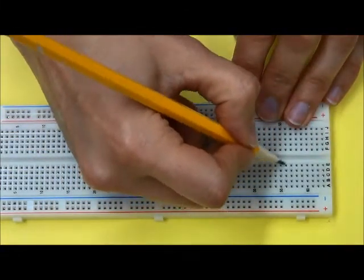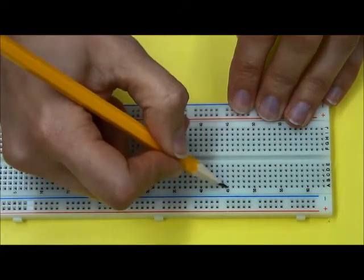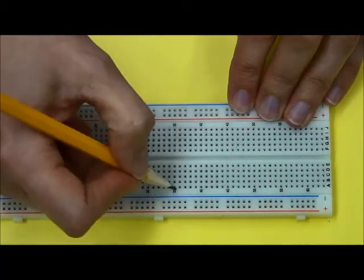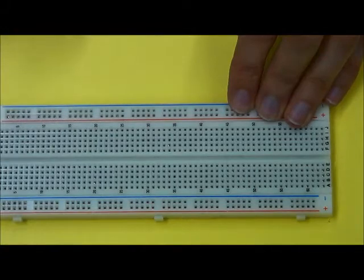The holes in the center of the board are all connected in a vertical fashion. So they're in little sets of five. These ones are connected, these ones are connected, these ones are connected. So each set is just a little set of five holes that are connected to each other vertically.